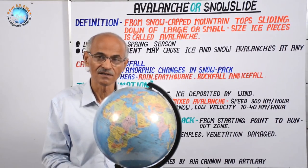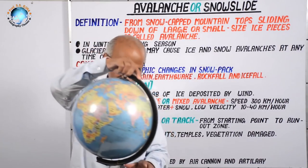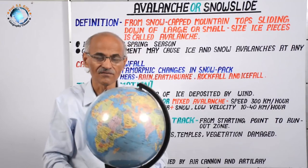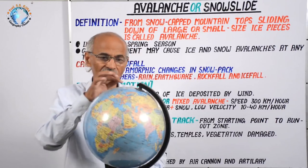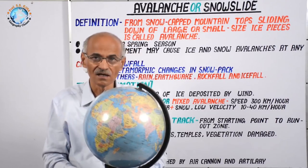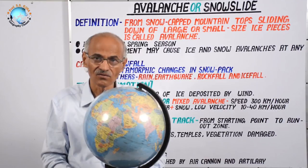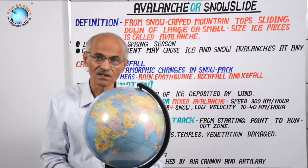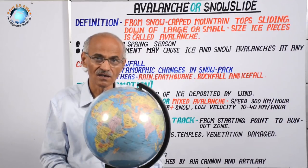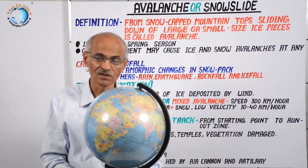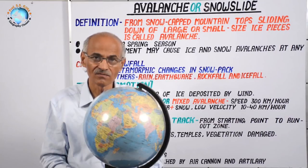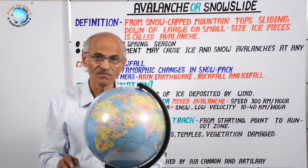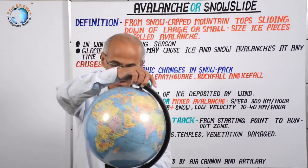Generally, these high mountain peaks record avalanche or snowslide. There are rare chances of avalanche along Arctic and Antarctic circles because the slope there is less. But if the slope is high, like in Norway and Sweden on the Scandinavian mountains, avalanche may take place there.